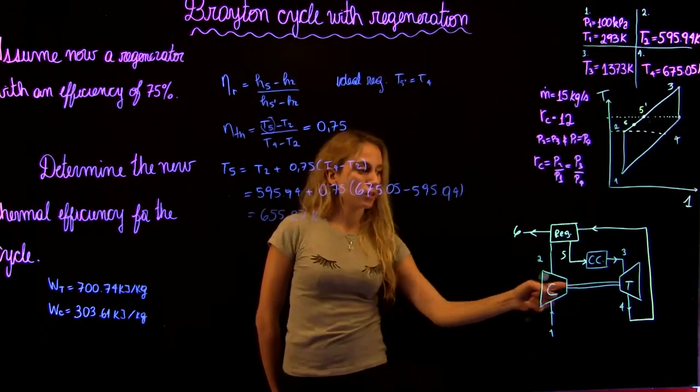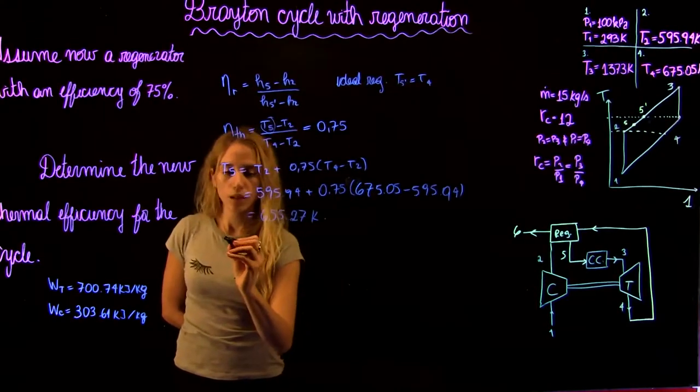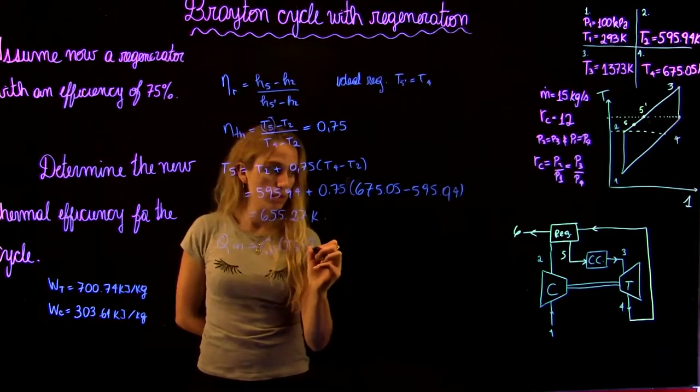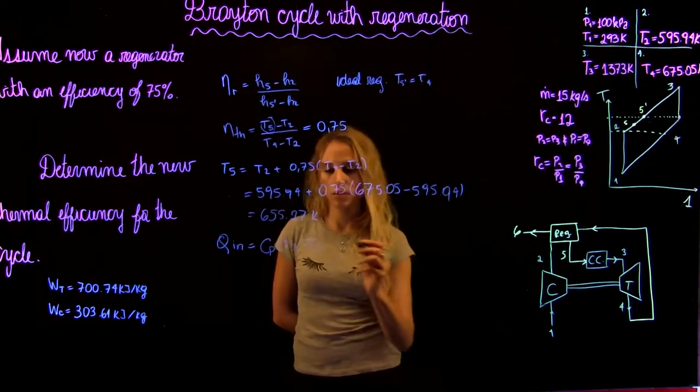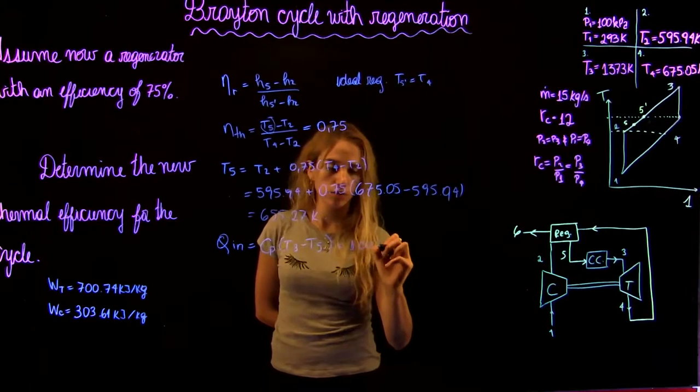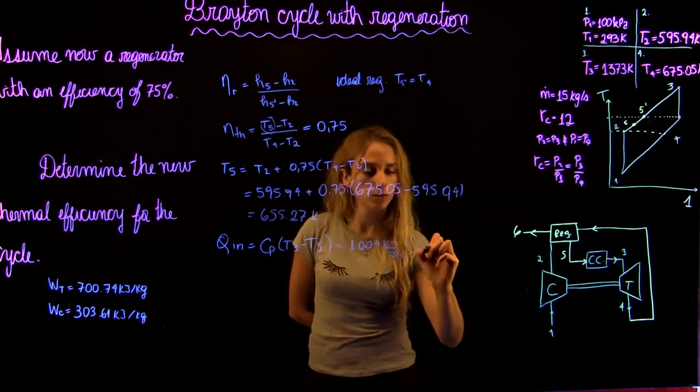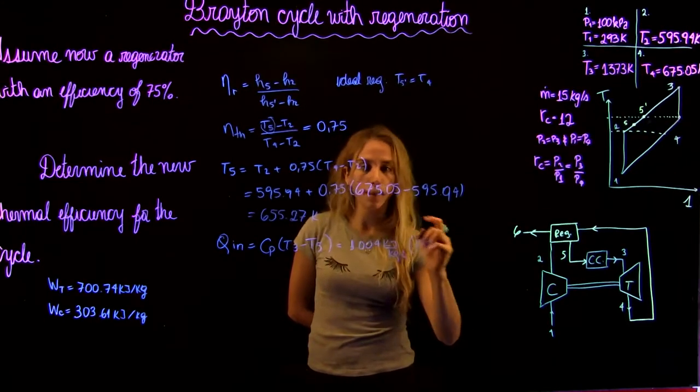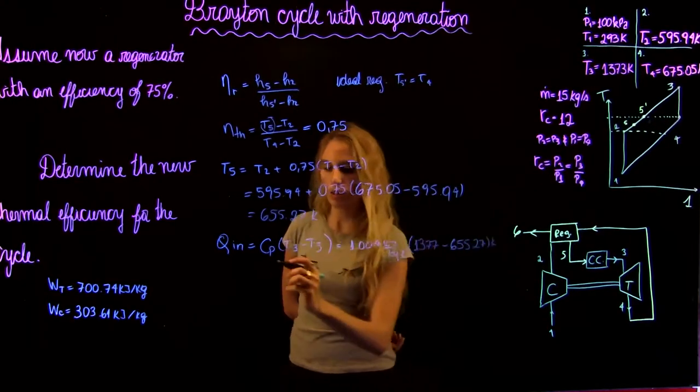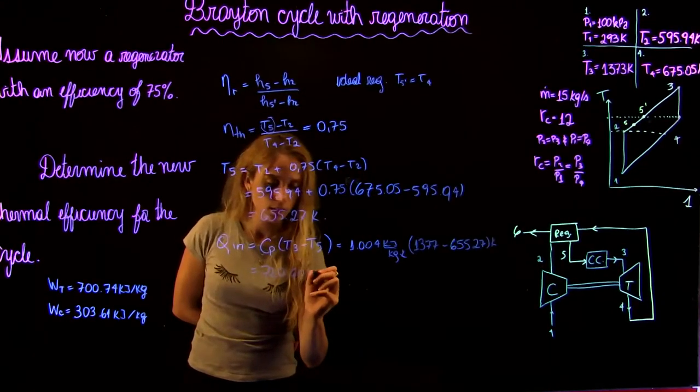The work of the compressor and the work of the turbine won't change, but what is going to change is the heat input. The heat input is equal to cp times (t3 minus t5) from the combustion chamber. It's 1.004 kJ per kg per kelvin, t3 is 1373 minus t5, 655 kelvins, giving us a heat input of 720.60 kJ per kg.